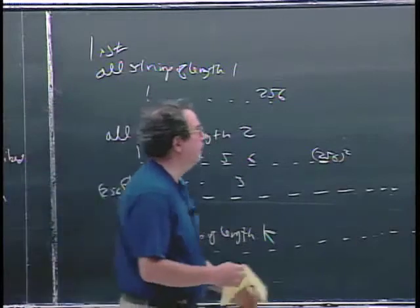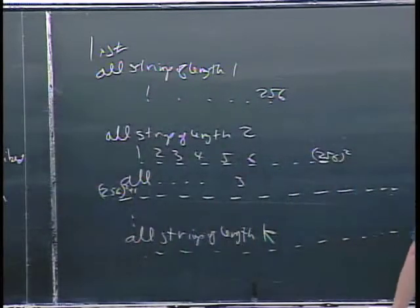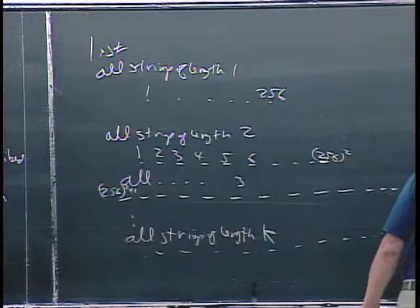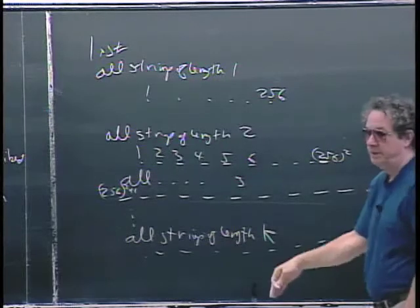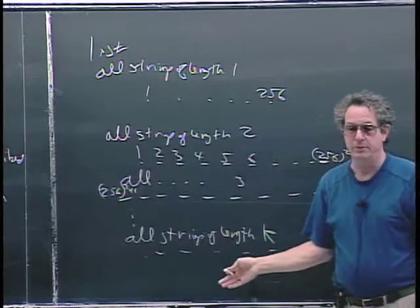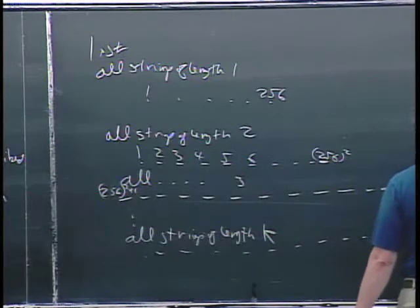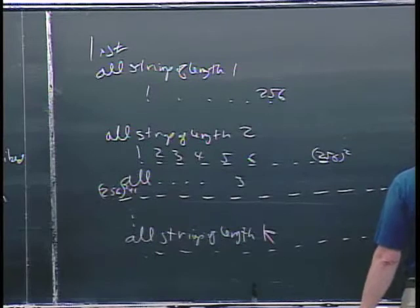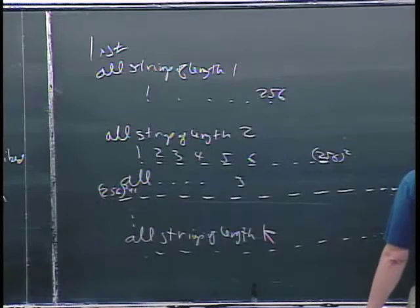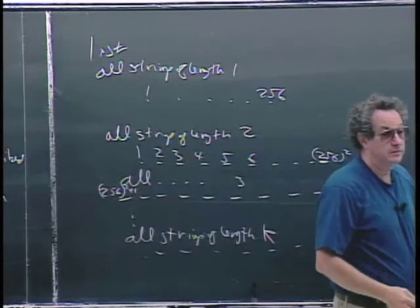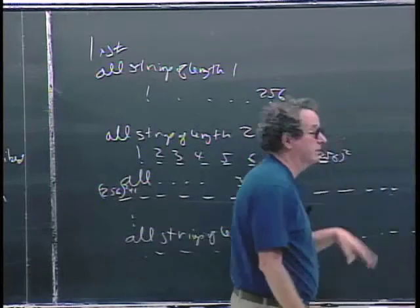So I can think of the following conceptual thing: a table that, with the correspondence between Turing machines and the natural numbers, enumerates all Turing machines along one axis — in the order given by their correspondence to the integers.